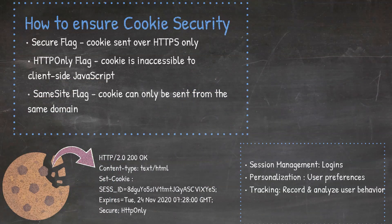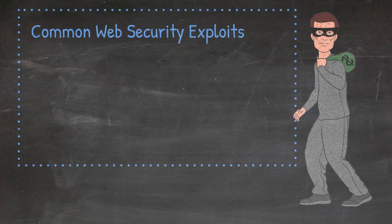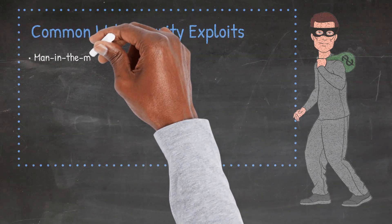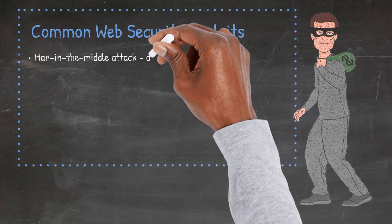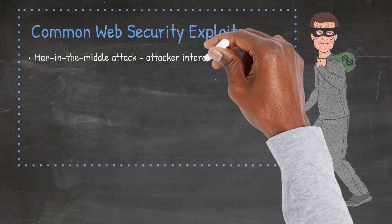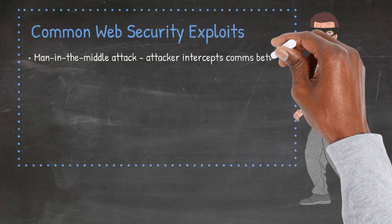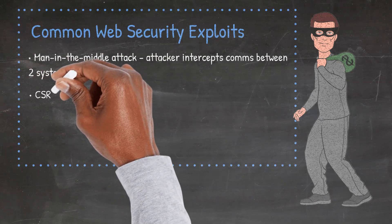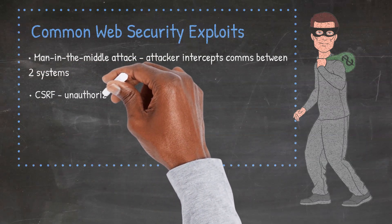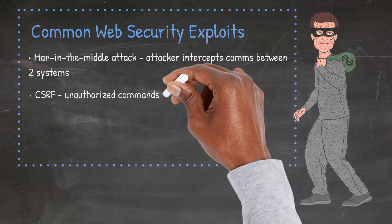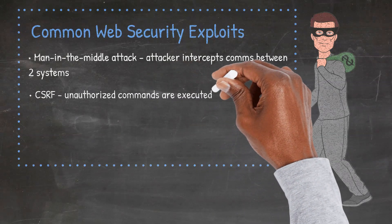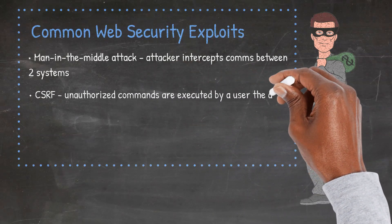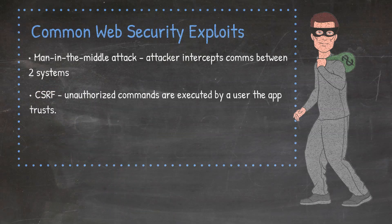Here is a brief explanation of the exploits I have just mentioned. Man-in-the-middle attack is a security exploit in which an attacker intercepts communication between two systems. CSRF is a type of malicious exploit where unauthorized commands are submitted from a user that the web application trusts. An attacker may trick the users of a web application into executing commands of the attacker's choosing, such as transferring funds, changing their email addresses, etc.